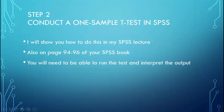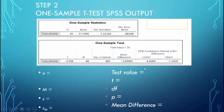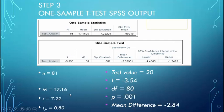Step two is to run the one-sample t-test in SPSS, which I'll show you in my lecture. This is covered on pages 94 to 96 of your textbook. Here is our output. It gives you a lot of information: N, which is your sample size — we tested 81 people; the mean anxiety score of 17.16; the standard deviation of 7.22; and the standard error of the mean of 0.80, which is the standard deviation over the square root of N.